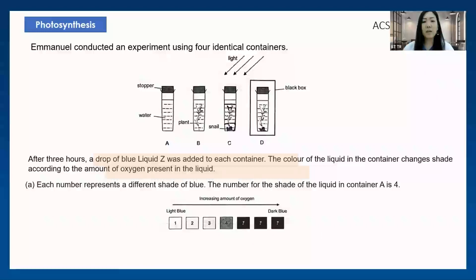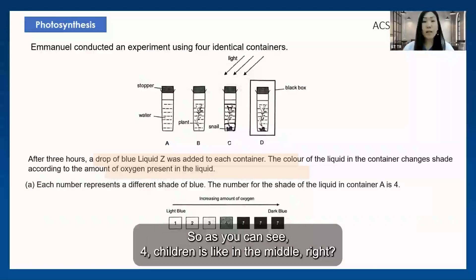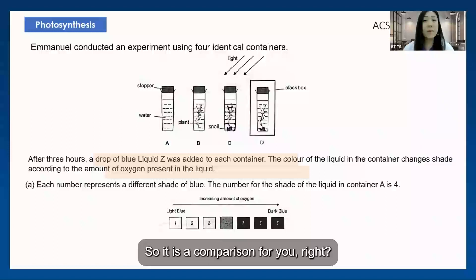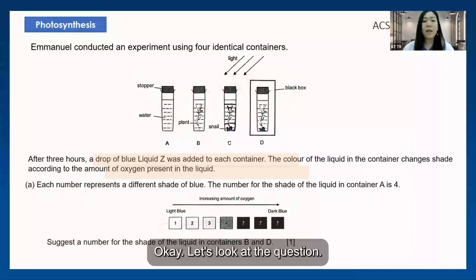The number for the shade of liquid in container A is four. As you can see, four is like in the middle - it looks like a little bit of oxygen in the water, not too much, not too little. This is a comparison for you.